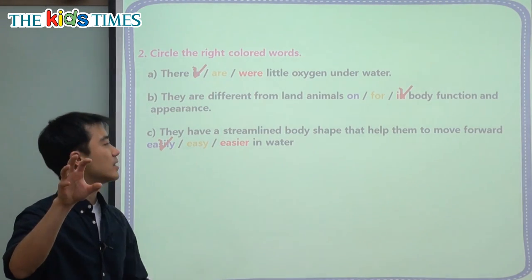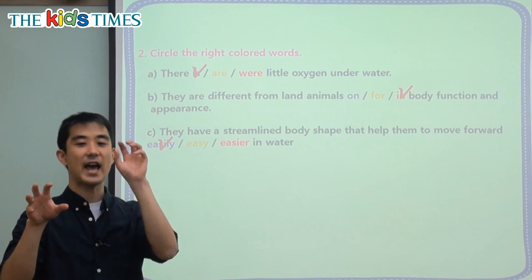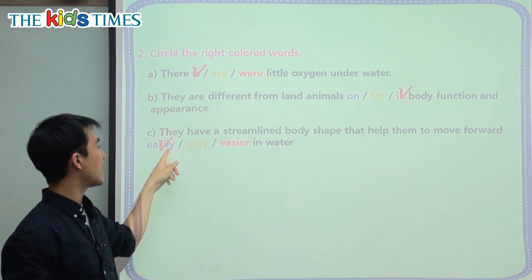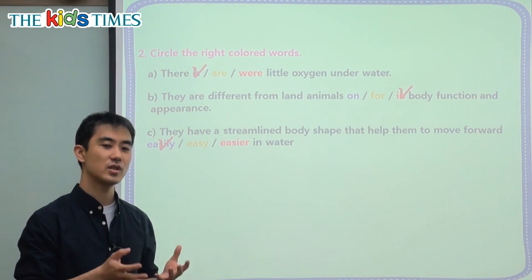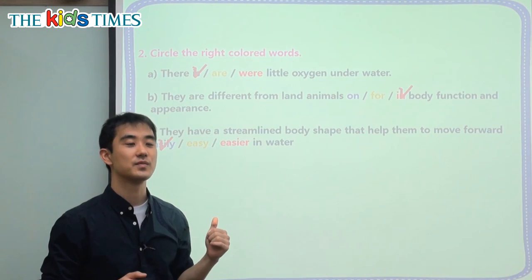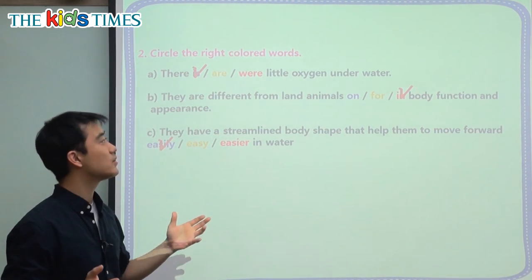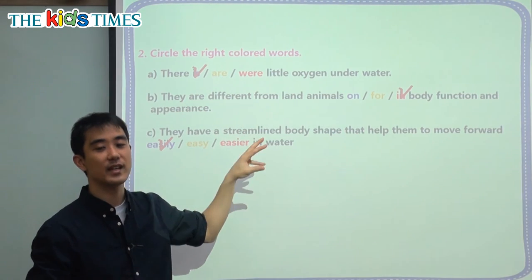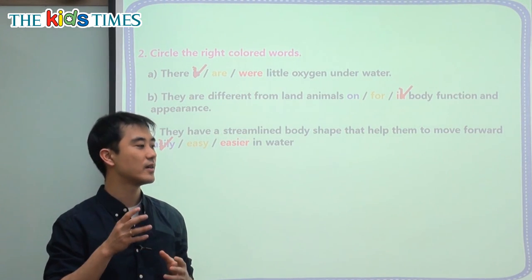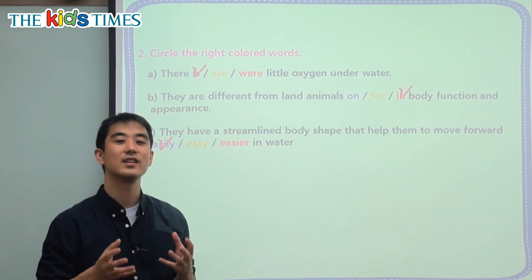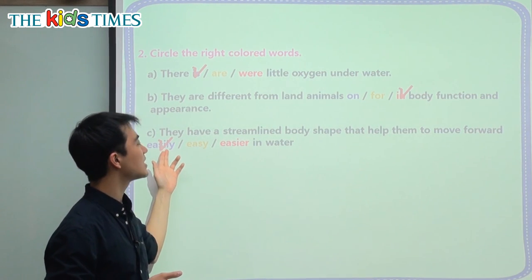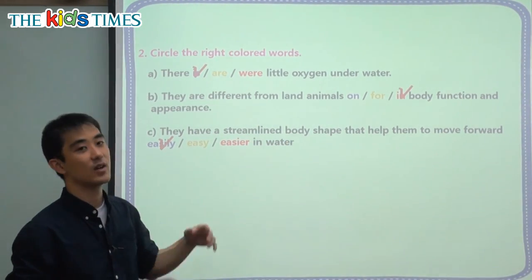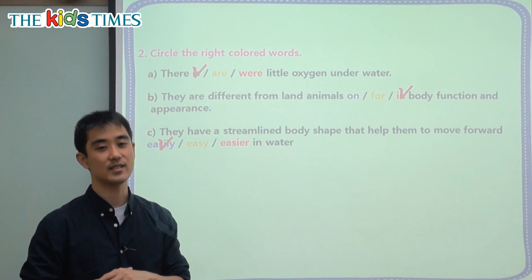So we have to use the word 'easily.' When we have a verb like 'move,' we put an adverb after it — quickly, slowly, happily. When we add '-ly,' it usually goes with the verb. To review: 'is' because oxygen is only one; 'in' because when we say 'different,' we put 'different in' together; and 'easily' is an adverb — the verb here is 'move.' They move easily, they eat easily, they walk easily, they swim easily.